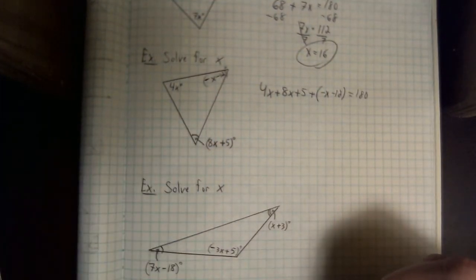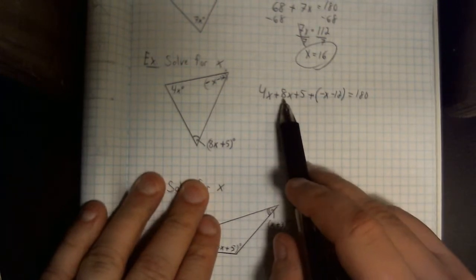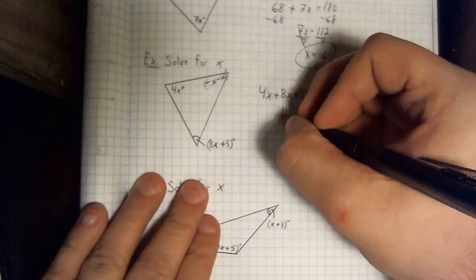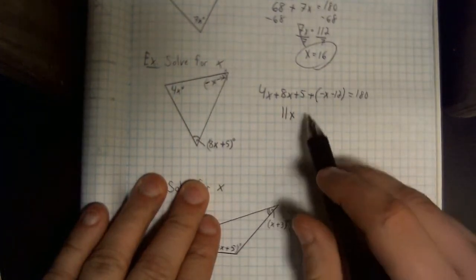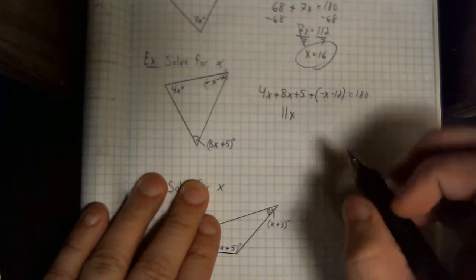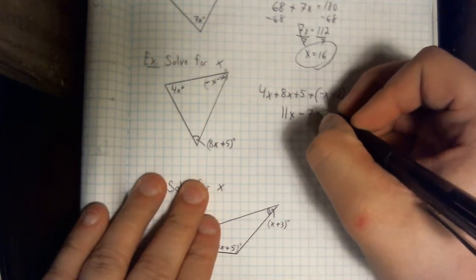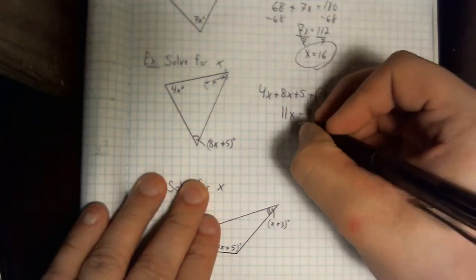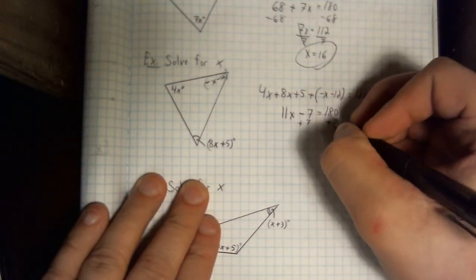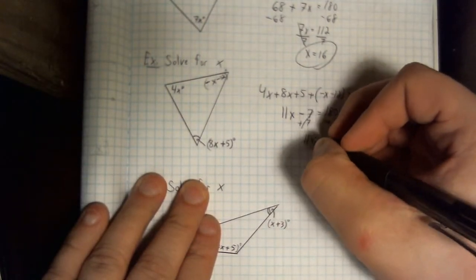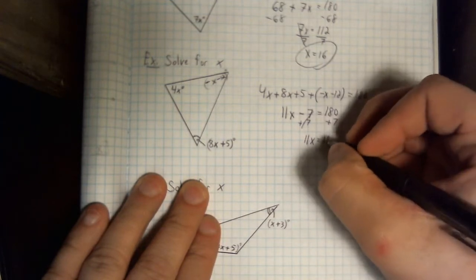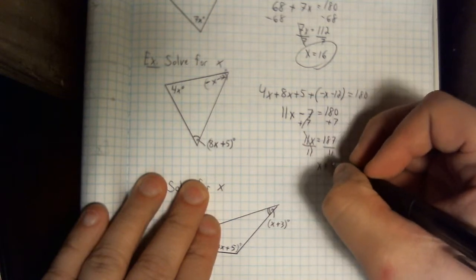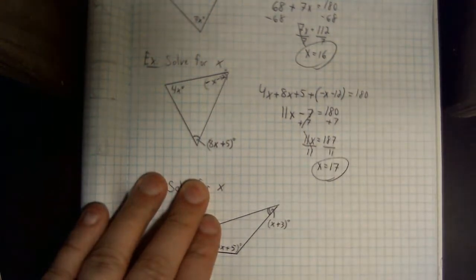All we have to do is combine like terms. 4x, 8x, and negative 1x is going to leave us with 11x. 5 and negative 12 is going to leave us with negative 7. And we haven't done anything to that other side yet. If you want to add 7, it's going to give us 11x equals 187. And if we divide by 11, that's going to leave us with x equaling 17.